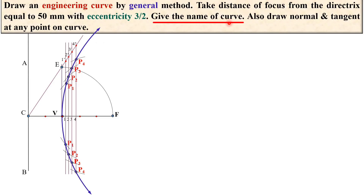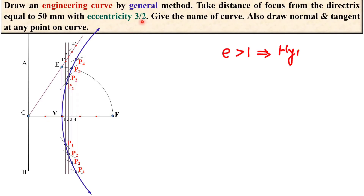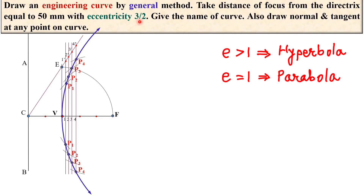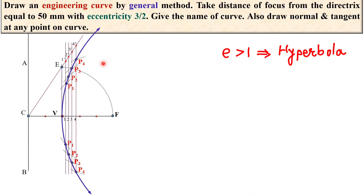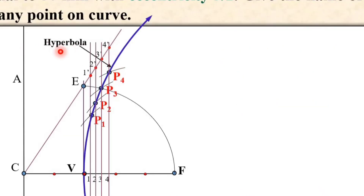Now give the name of the curve. The eccentricity is 3 by 2, which means it is greater than 1. As discussed in the earlier video about eccentricity: if eccentricity is greater than 1, it is a hyperbola; if exactly equal to 1, it is a parabola; and if less than 1, it is an ellipse. Here eccentricity is greater than 1, so the curve is a hyperbola.